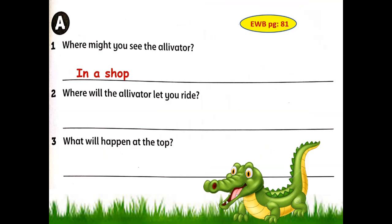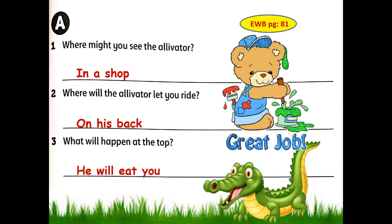Wonderful, children. You have to write this in your English workbook page number 81. And remember when you write, you have to write small and beautiful; letters should be seated on the line. Use a sharp pencil and take care of the tall and short letters. Where will the elevator let you ride? On his back. What will happen at the top? He will eat you. Quickly write the answer, children.